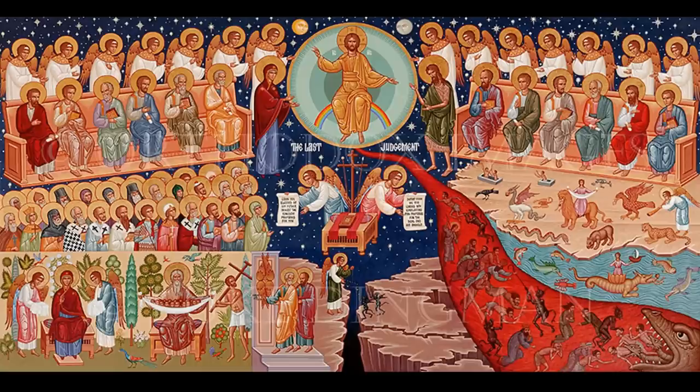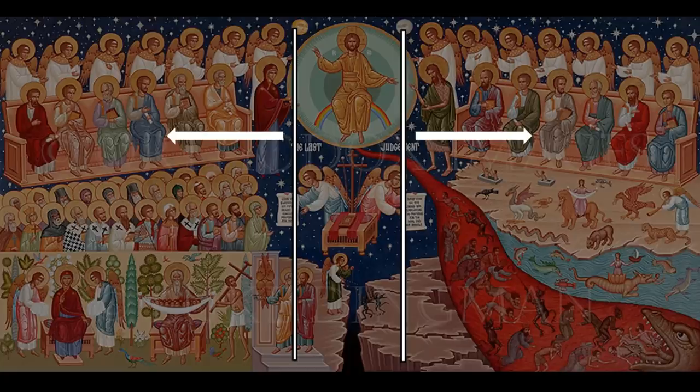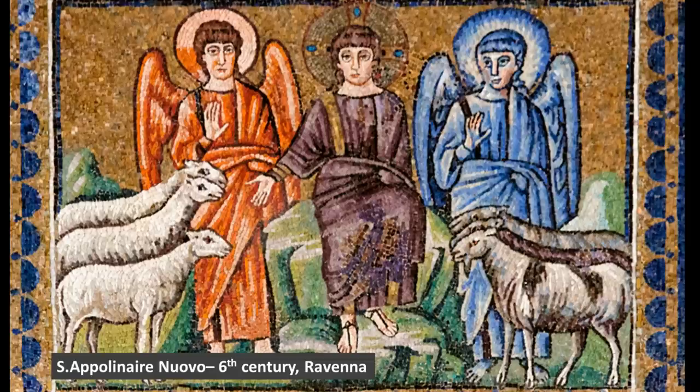There's more than that. We're going to start to see this other separation of the icon, between the right hand and the left hand. Of course, we know when we have the right hand and the left hand, we think immediately of the parable of Christ and the sheep and the goats. This is actually one of the earliest images of the Last Judgment — a 6th century image from Ravenna. Here it's very simple: there's Christ in the center, and then there are the sheep to his right and the goats to his left. And there's St. Michael on his right and Gabriel to his left.